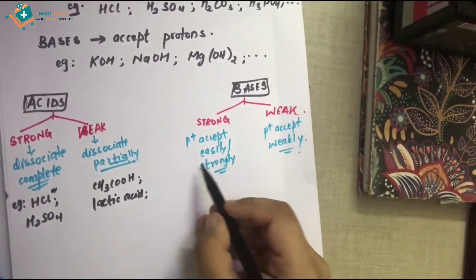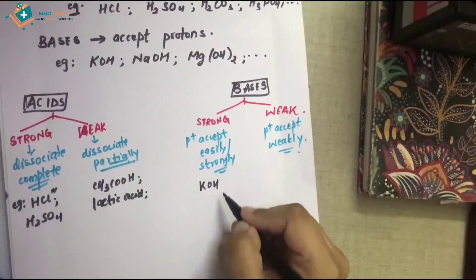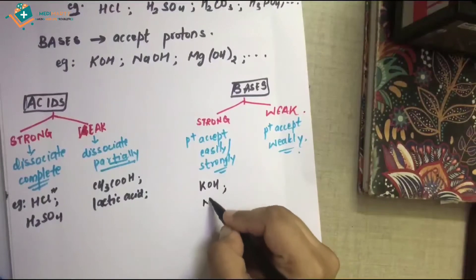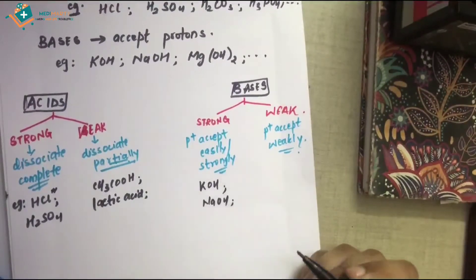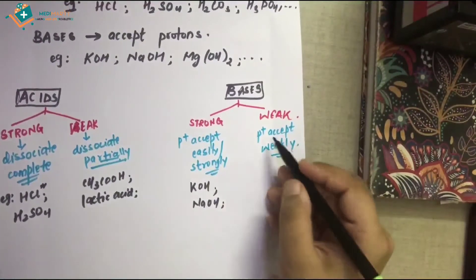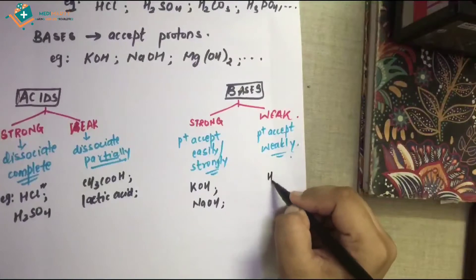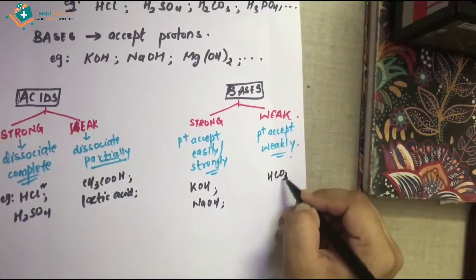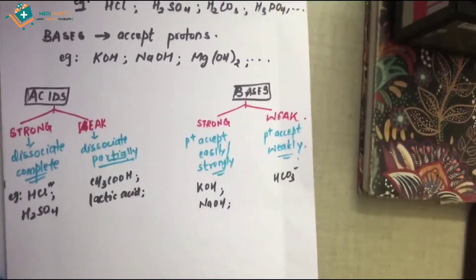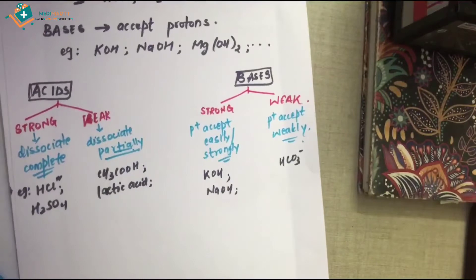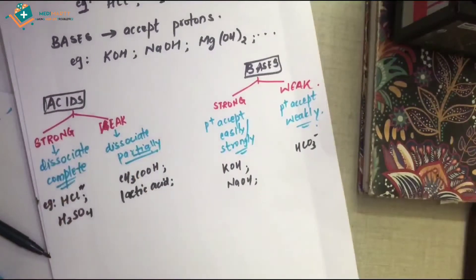For strong bases that accept protons easily or strongly, examples are potassium hydroxide and sodium hydroxide. For weak bases, an example is HCO₃⁻, also known as the bicarbonate ion.